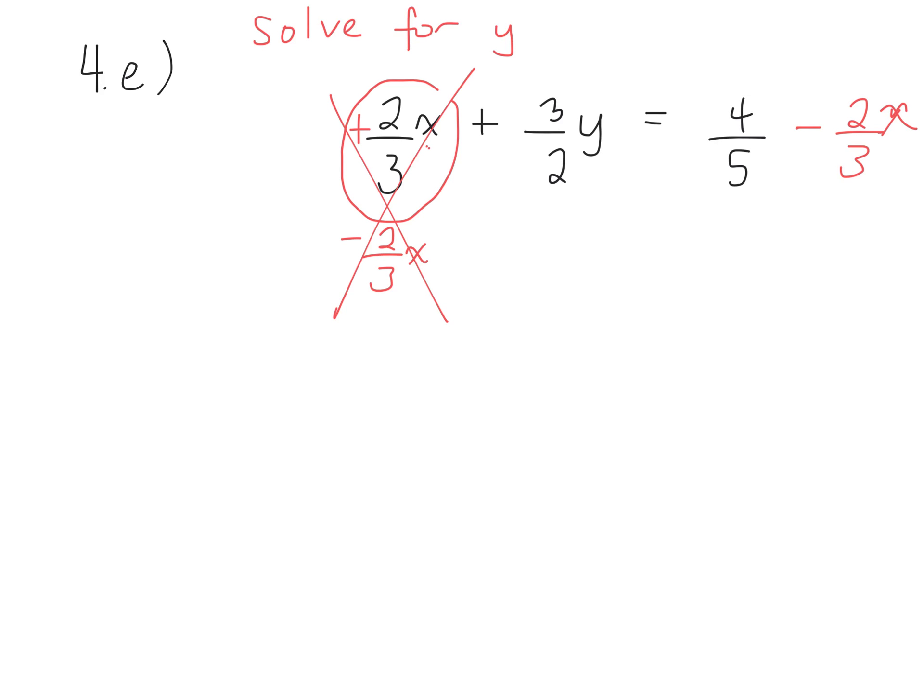So we need to divide this whole thing by 3 over 2, right? So what else needs to be divided by 3 over 2? Which terms? All of them, right? Divide by 3 over 2. Divide this by 3 over 2.